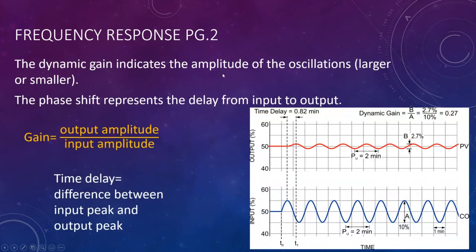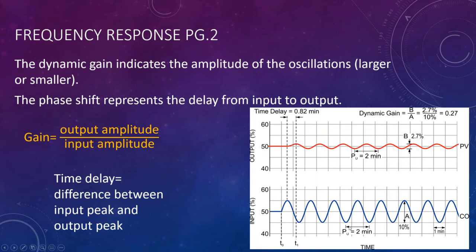Dynamic gain indicates whether output oscillation amplitude is larger or smaller than the input. Phase shift represents the delay from input to output — in this example, 0.82 minutes. These are the two basic formulas we'll use throughout the ILM. As frequency and ultimate period change, this affects phase shift and the process's ability to meet its gain.